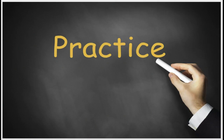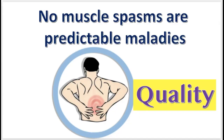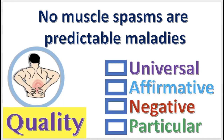Let's practice what we have learned. Practice problem number one: What is the quality of this proposition? Press pause if you need to — the answer will appear in three, two, one. The quality is negative.